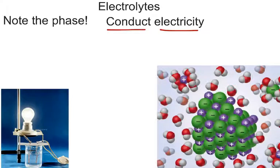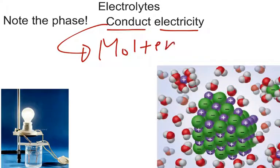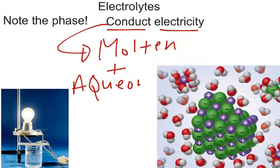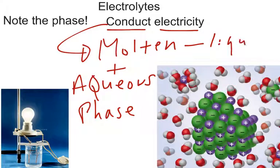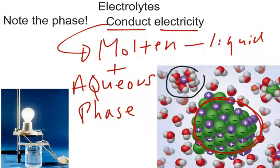Electrolytes conduct electricity in what phases? In the molten and the aqueous phase. We discussed what both of those mean already. Molten simply means melted liquid, therefore it's going to be in liquid form. Aqueous means dissolved in water. In this picture I have a crystal lattice right here, but if you notice what's happening, the water molecules are surrounding the ions of the crystal lattice and pulling it apart. There's a positive ion right there in the center and a negative ion over here being pulled apart from the crystal lattice.